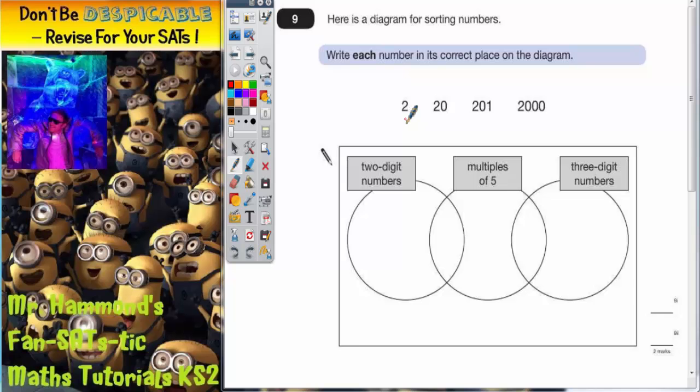So let's look at the number 2. So the number 2, has it got 2 digits? No it hasn't. Is it a multiple of 5? Is it in the 5 times table? No it's not. Has it got 3 digits? No it hasn't. So actually the number 2 doesn't fit into any of the 3 circles so we need to put the number 2 outside of the 3 circles so the number 2 can be written anywhere in here.